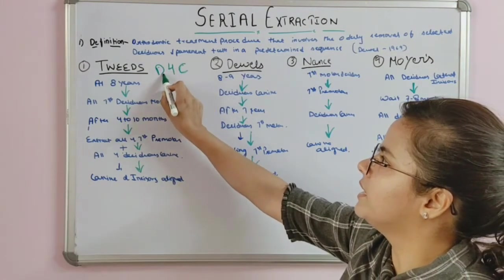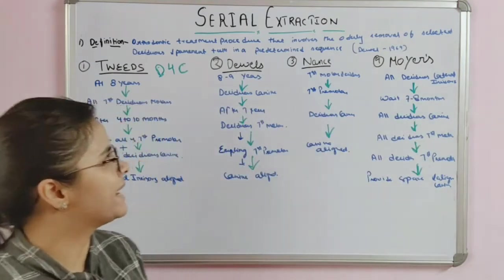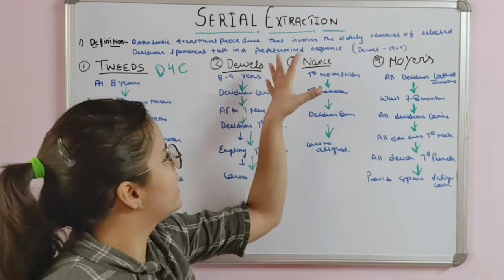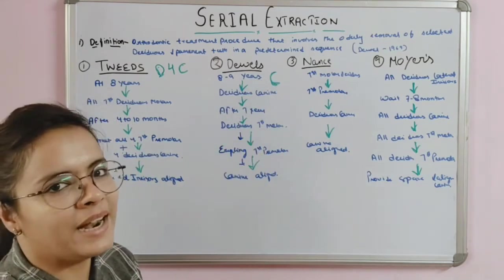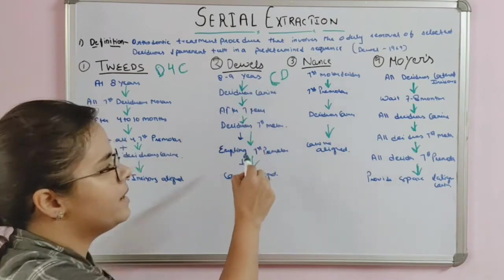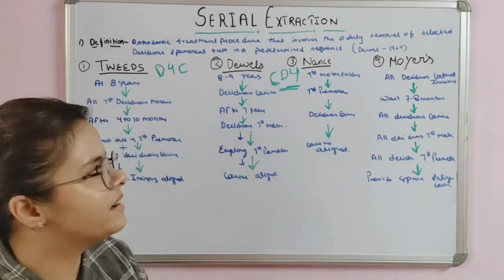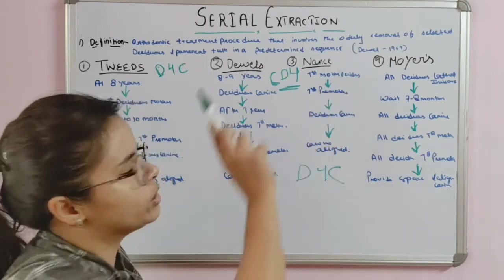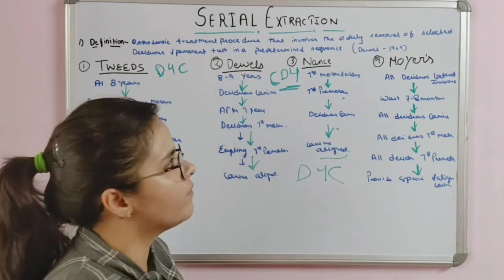In Dwell's method, a three-step technique begins at eight to nine years of age: first, all deciduous canines (C) are extracted. After waiting one year for permanent premolars to start erupting, all deciduous first molars are extracted. Then the erupting first premolars are extracted — the sequence is C, D, 4 — after which the canines align. In Nance's method, the sequence is the same as Tweed's: D, 4, C — first deciduous molar, then first premolar, then deciduous canine.